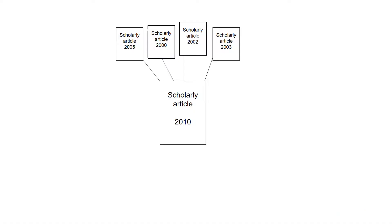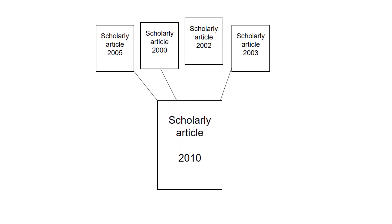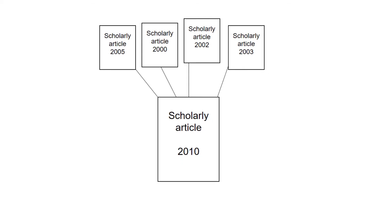A published research article has something like parents and aunts and uncles too. It cites previous research articles, books, or other sources. It builds on them.